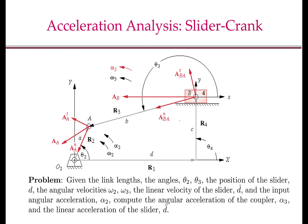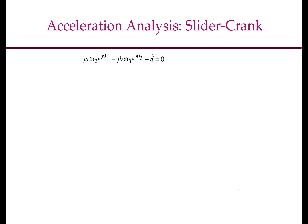Let us now look at the acceleration analysis problem for the slider crank mechanism. Given the link lengths, the angles theta 2 and theta 3, the position of the slider d, the angular velocities omega 2 and omega 3, the linear velocity d dot, and the input angular acceleration alpha 2 of the crank, we have to compute the angular acceleration of the coupler, denoted by alpha 3, and the linear acceleration of the slider, denoted by d double dot. When performing acceleration analysis, we assume both position and velocity analysis have already been done.